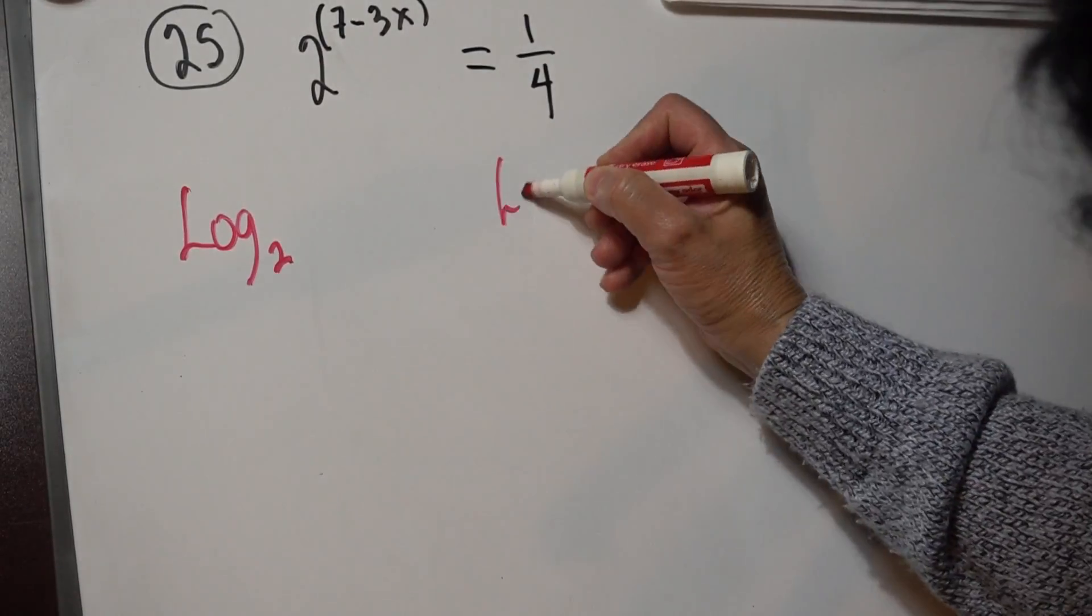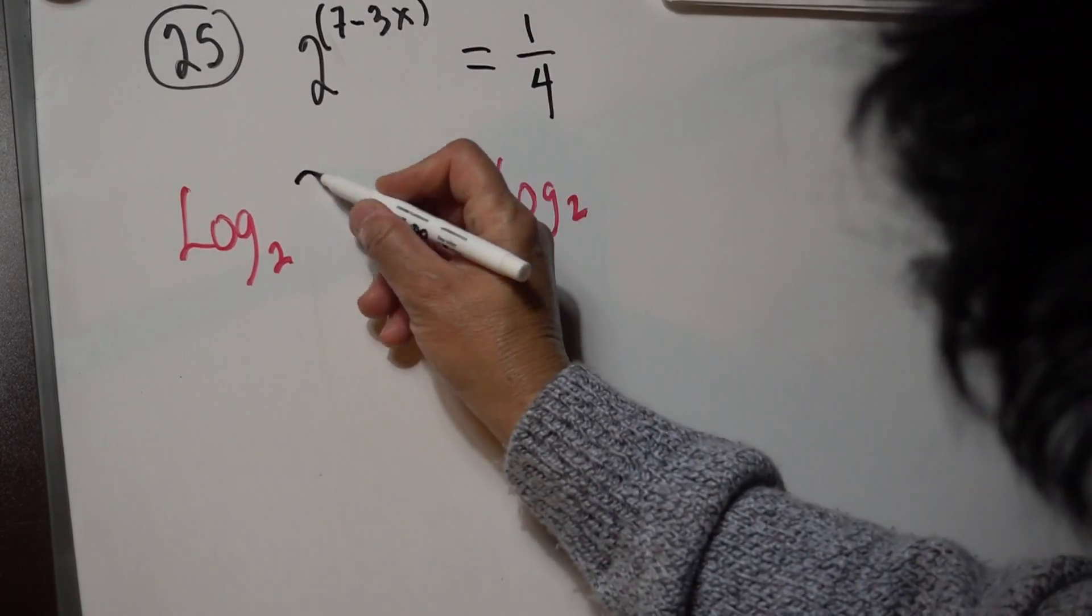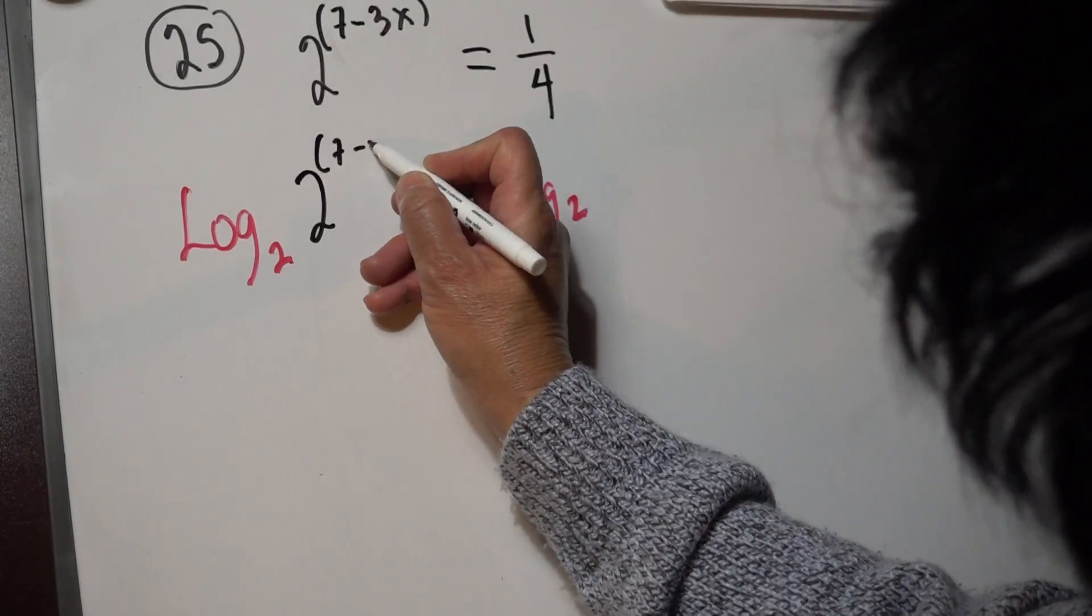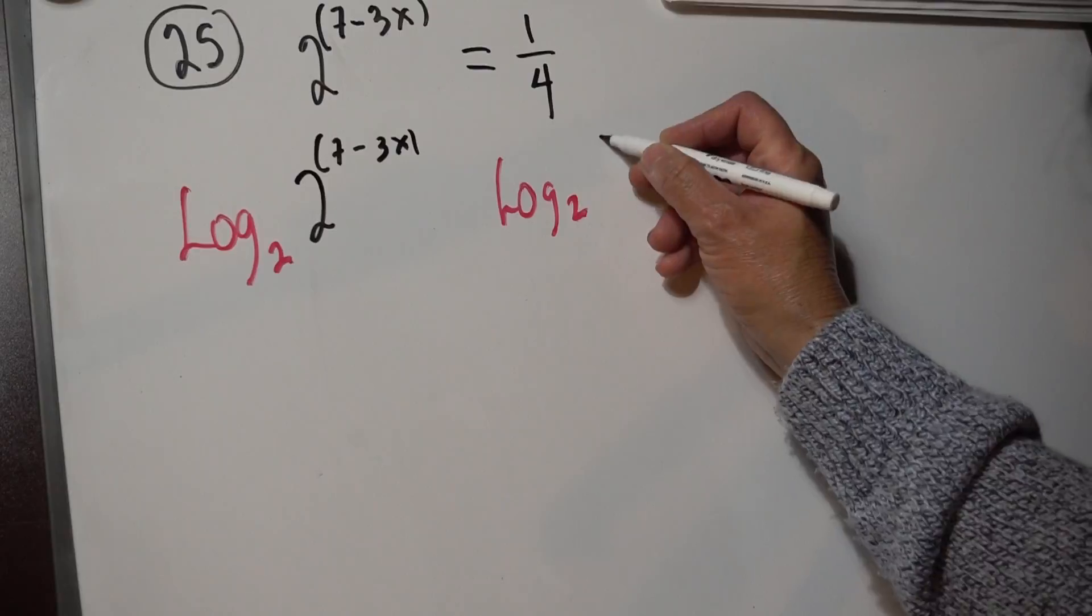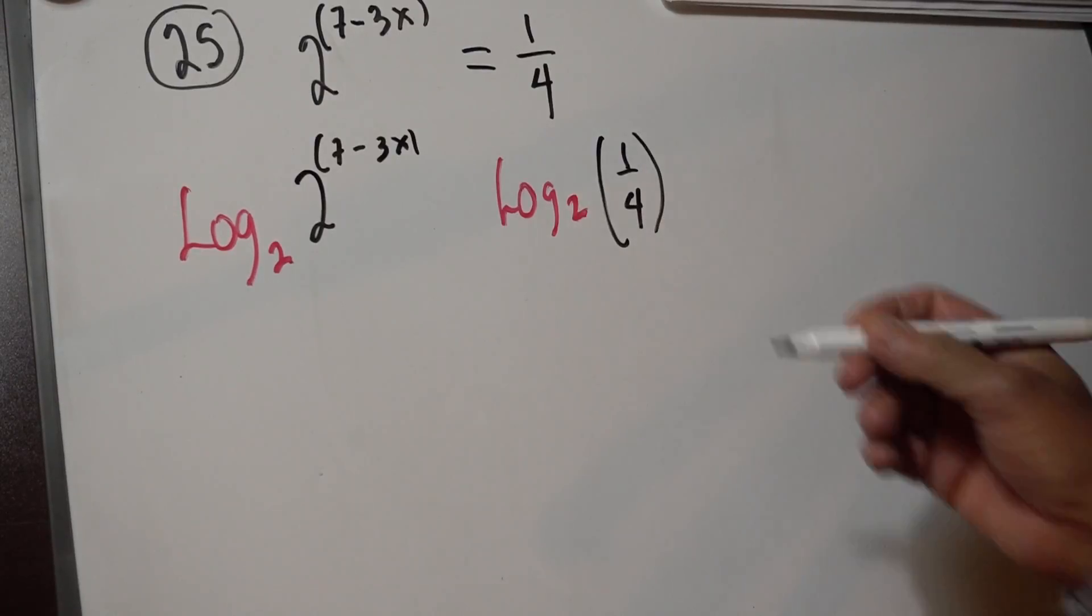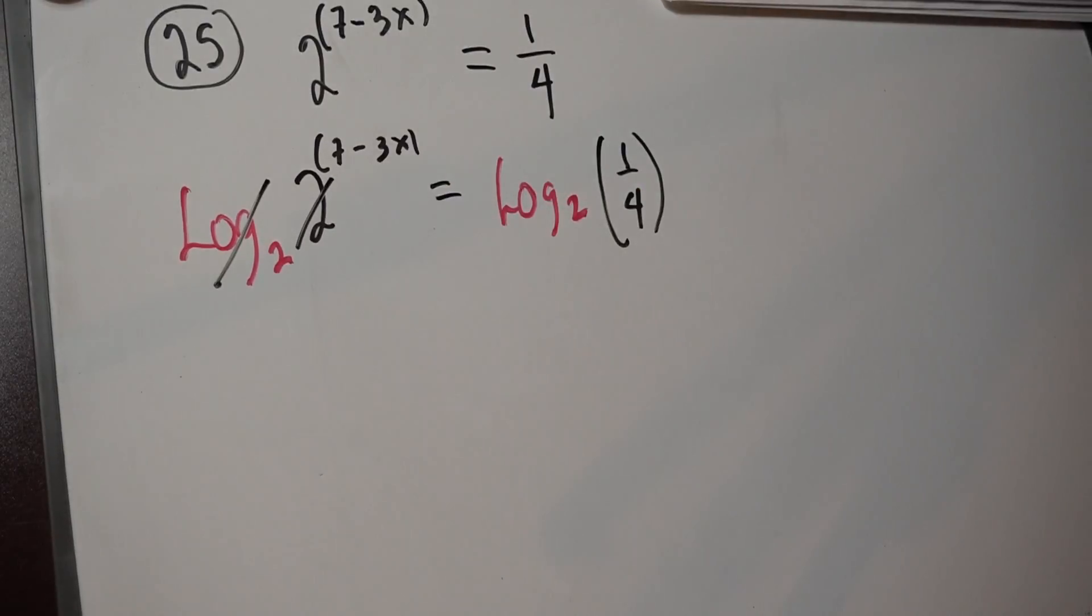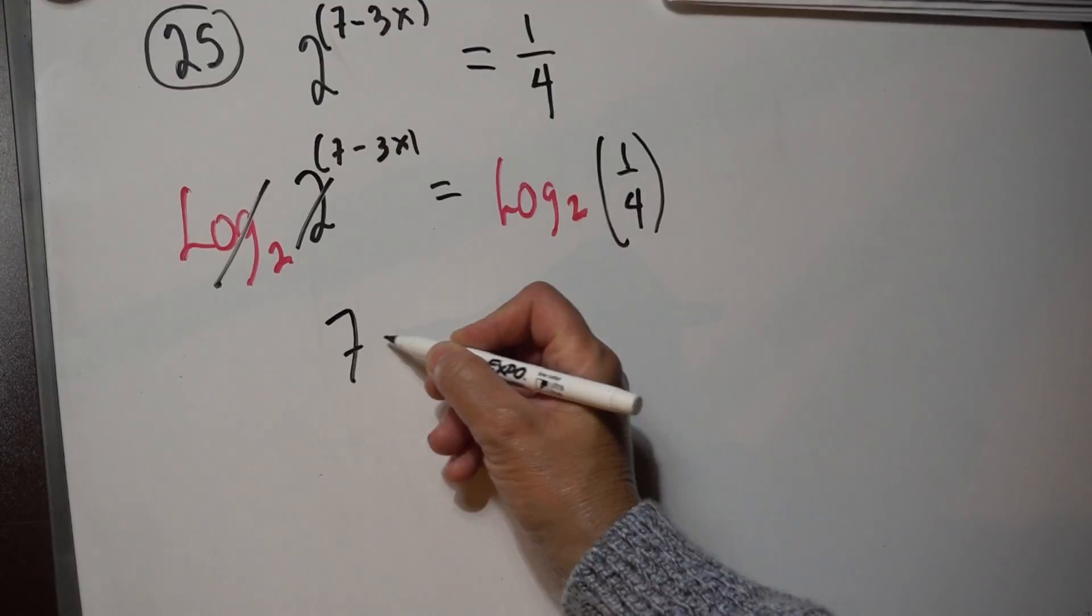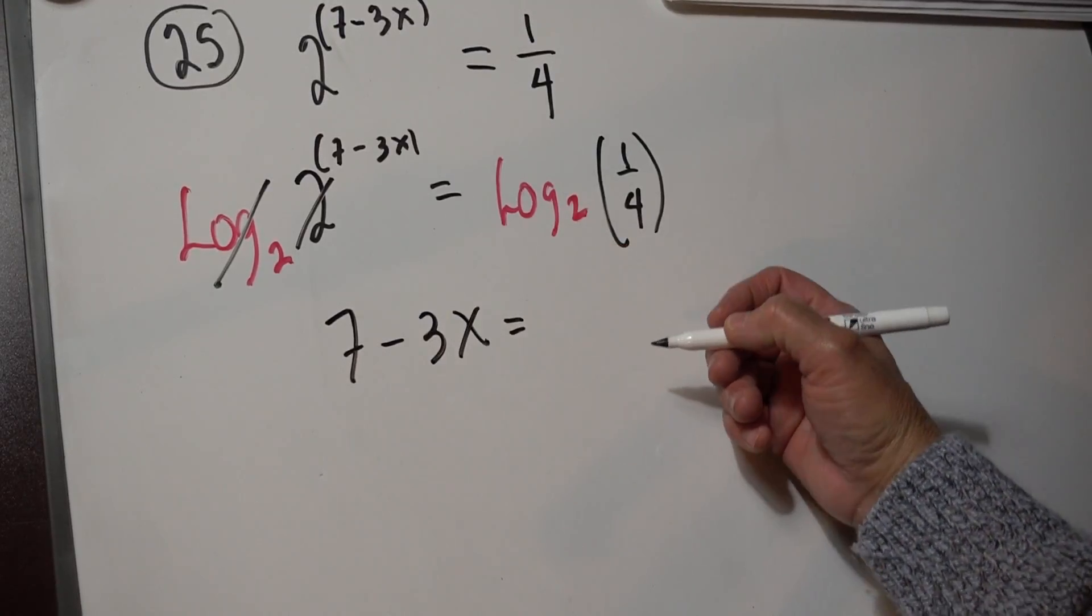We apply log base 2 in both parts of the equation, so we have log base 2 of 2 to the 7 minus 3x equals log base 2 of one fourth. Then we cancel log in the base 2, and we have 7 minus 3x equals log base 2 of one fourth.